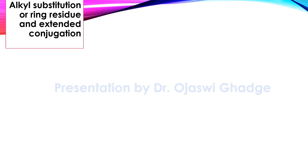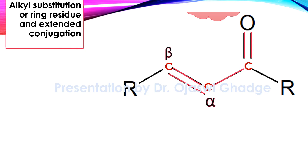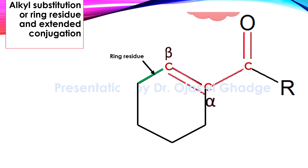Let us now understand alkyl substitutions, ring residues, and extended conjugations for alpha-beta unsaturated systems. This is our basic system: the colored carbons, pink color bonds, and oxygen atom. The green color bond which you see is called the alkyl substitution. If such a bond is a part of any ring, then we call that bond as the ring residue. If there is a third double bond present in the system and that too is in conjugation with the earlier basic moiety, then we call that double bond as an extended conjugation.